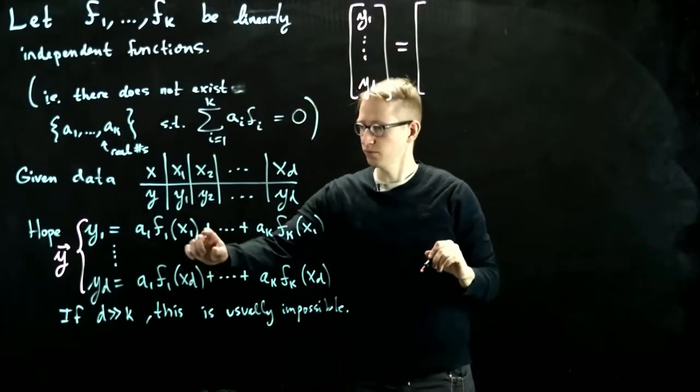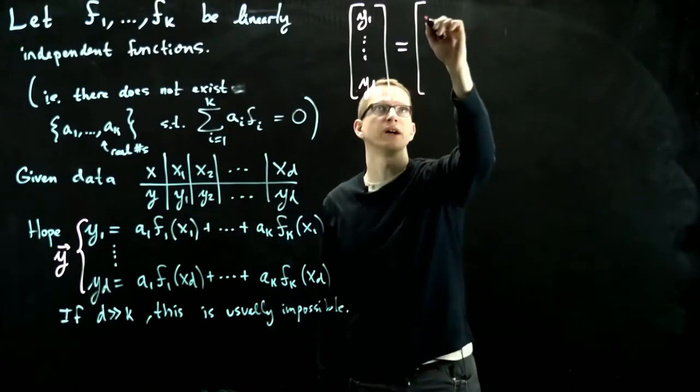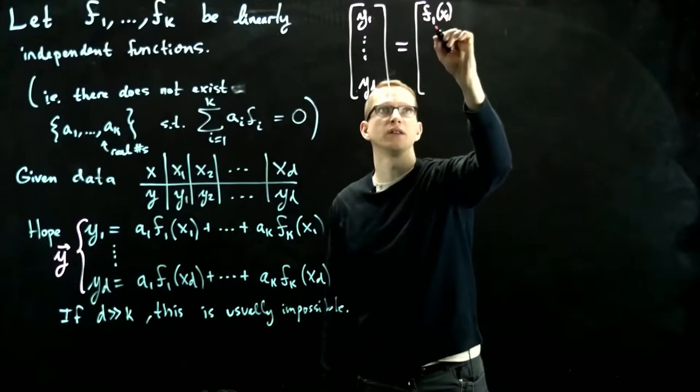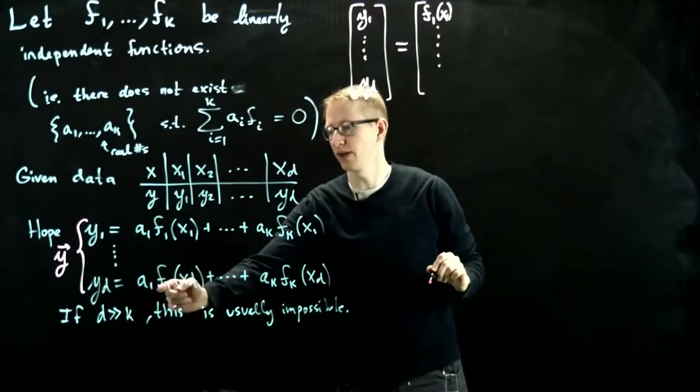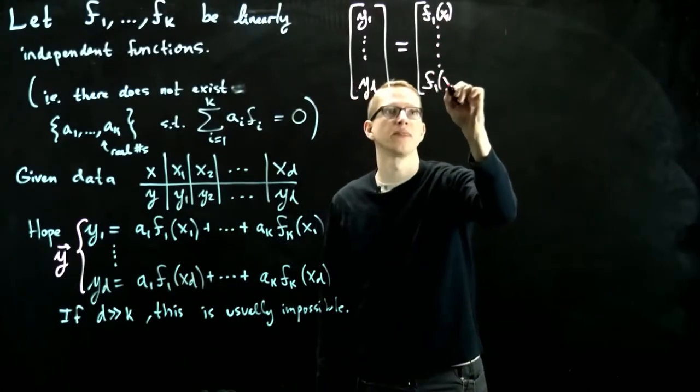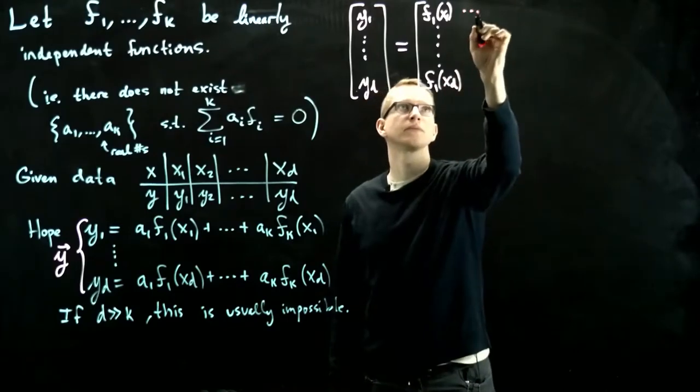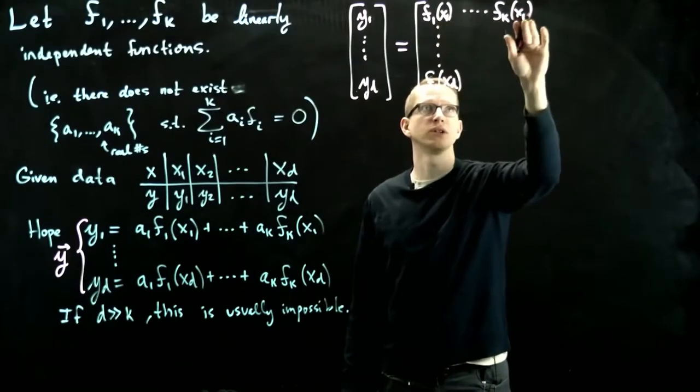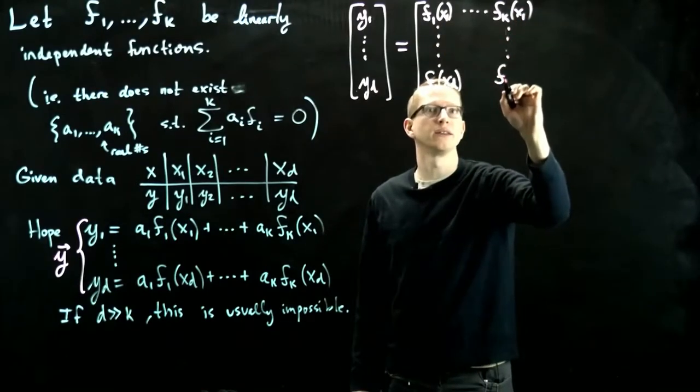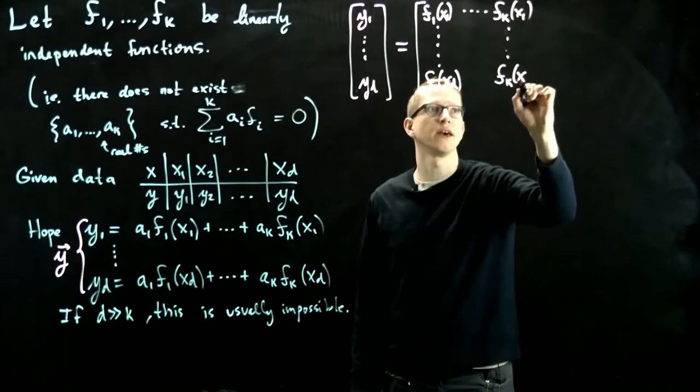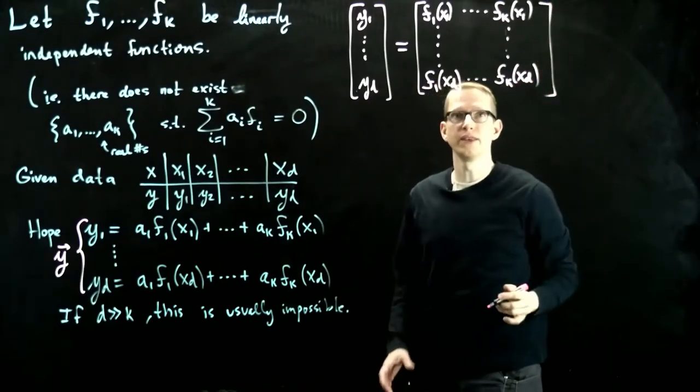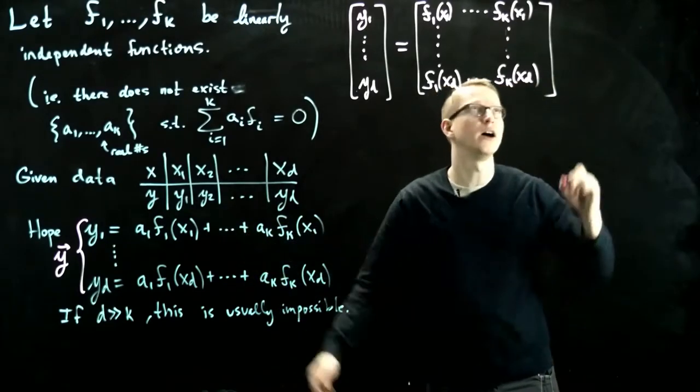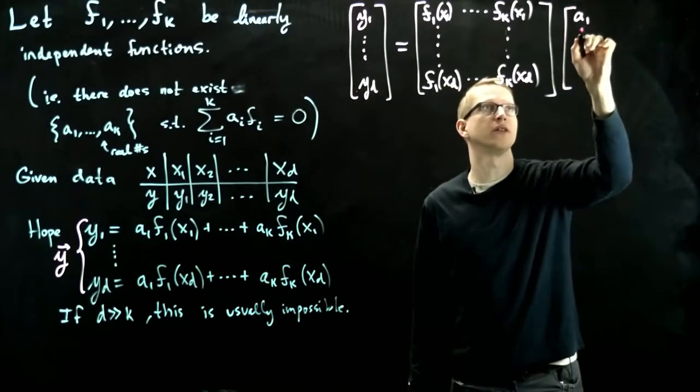This looks like the vector y1 down to yd. This is what this equation is represented by, a matrix whose entries are given by these values of f. So f1(x1) in the first column, and the coefficient in front of a1 is f1(xd). And this goes up to fk, still x1, so x1 is the first row, and down to fk(xd) in the last row. This matrix is applied to the vector of unknowns, a1 through ak.